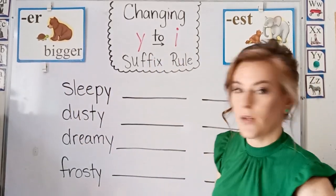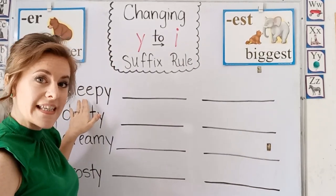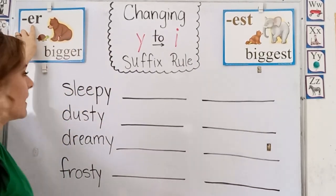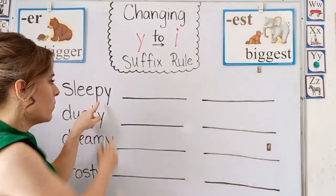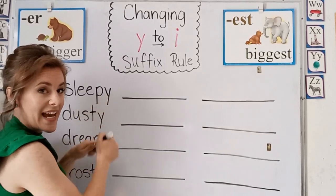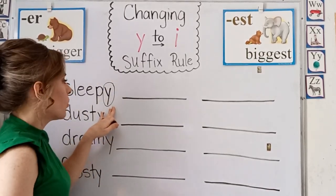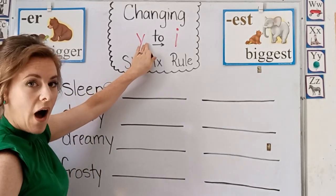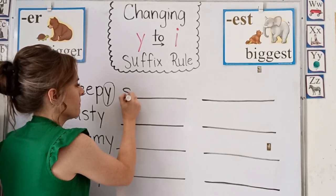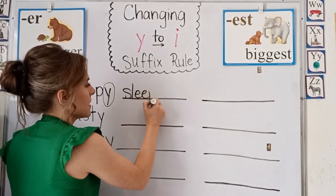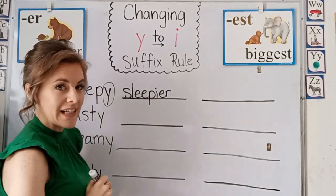So let's do some examples. Here we have sleepy, and we're going to add the suffix er. Now er begins with an E and we have a Y at the end of our root word. So we're going to change this Y to an I before we add our suffix. Sleepier.